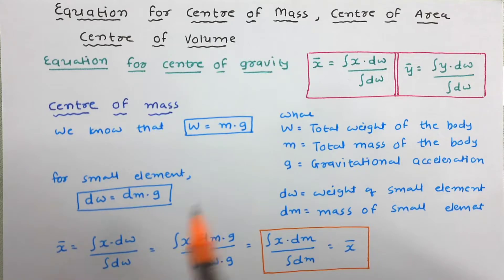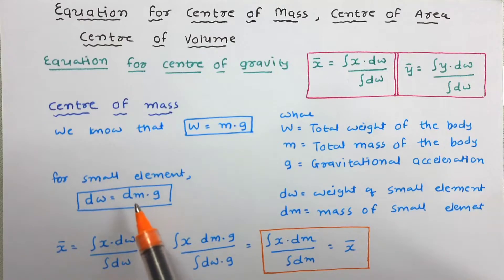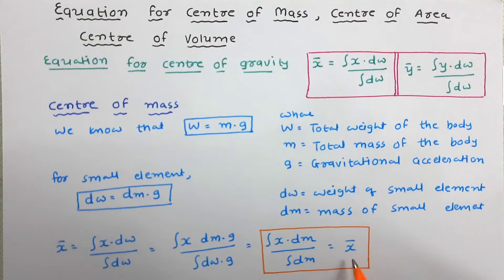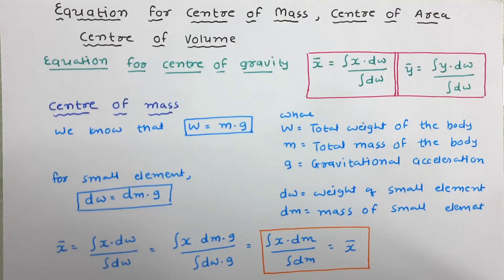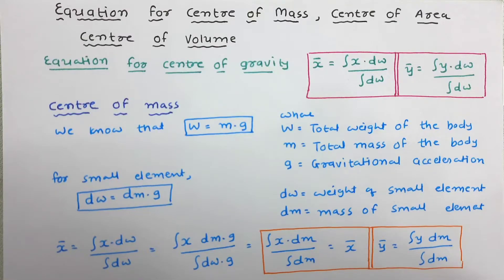Now let us use this in the equation of center of gravity. Instead of dw, the value of dm into g is substituted in both terms. Since g is a constant, it cancels out from both numerator and denominator. So ultimately we get x̄ equal to integration of x dm divided by integration of dm. Similarly, ȳ is equal to integration of y dm divided by integration of dm.